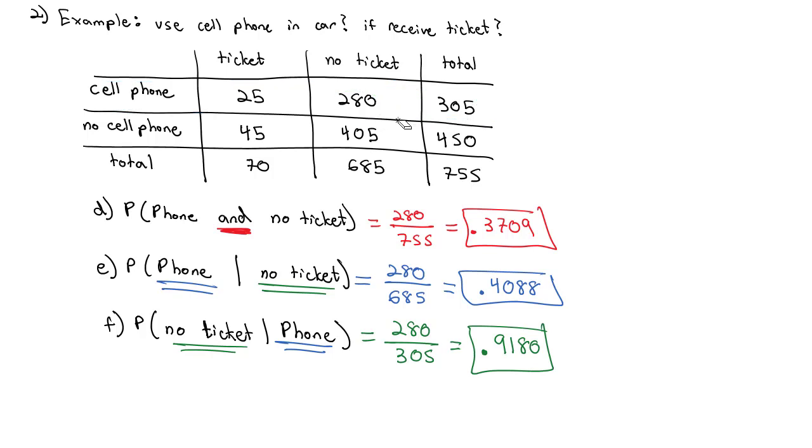Using these contingency tables is nice because it provides a more direct way to find the probabilities we're looking for.